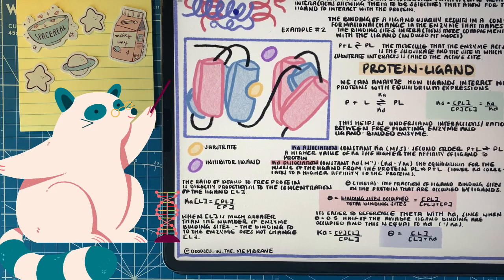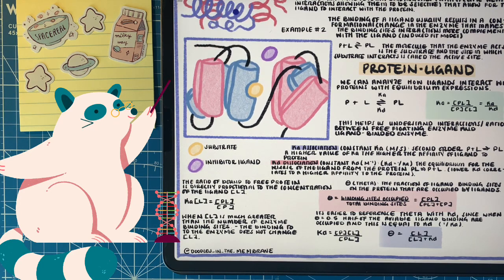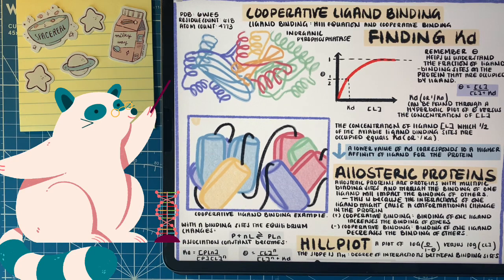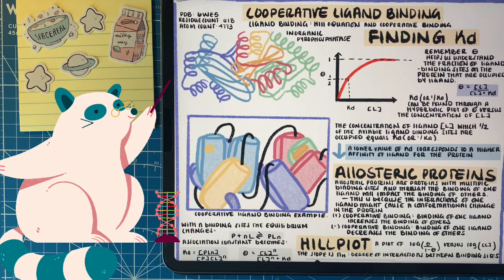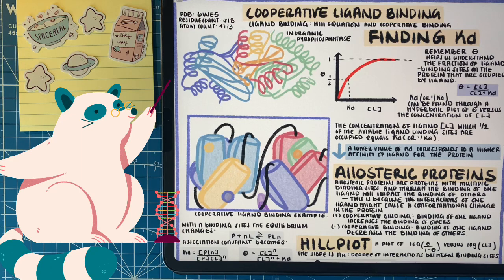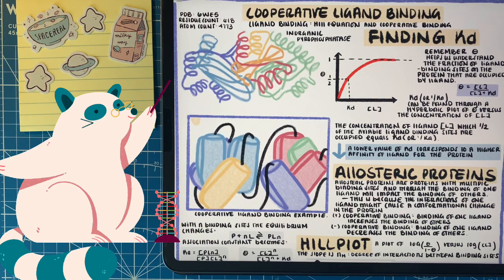It's actually easier to find theta if we reference it with the dissociation constant KD. Referencing theta with KD, we simplify the equation to just reference the concentration of the ligand divided by the concentration of the ligand plus the dissociation constant. Interestingly, when theta equals one-half, we have the same value as the dissociation constant, or 1 over Ka.